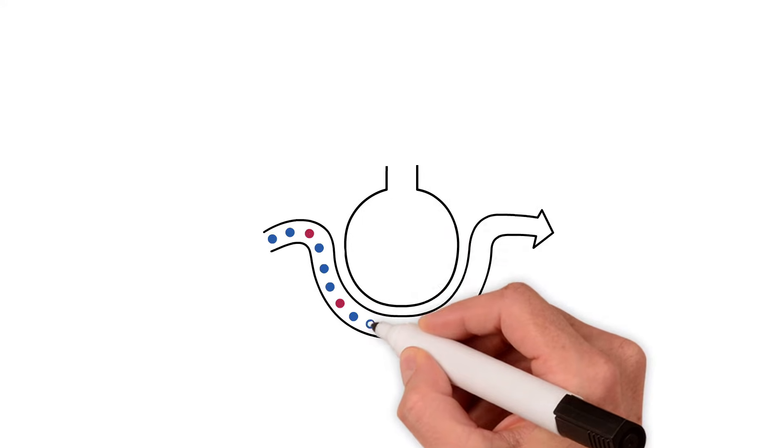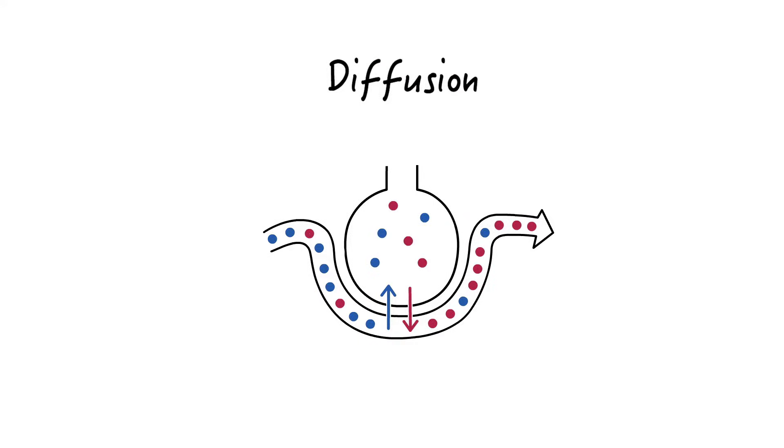Gas movement across the alveolar capillary membrane occurs by diffusion, and this process is described by Fick's law.